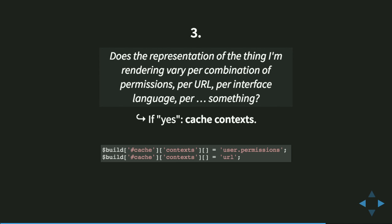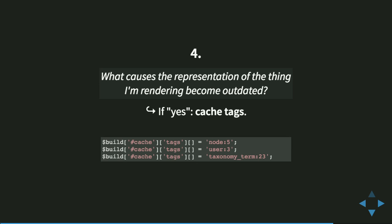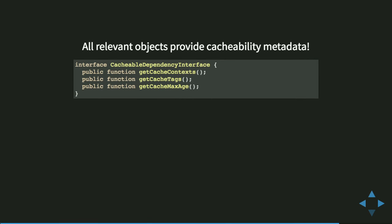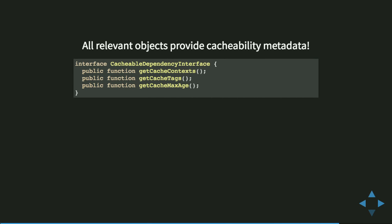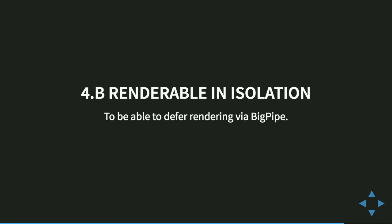If you have something that causes the representation of what you're rendering to become outdated — like an editor editing a node — then you need cache tags for the node you are rendering. When it becomes outdated time-wise, you add a max age. The standard is to cache permanently. All relevant objects within Drupal have a wonderful cacheable dependency interface where you can get cache context, cache tags, and max age. That's implemented by almost everything in Drupal: configuration, all entities, content config, access results, block context, condition plugins, and so on.